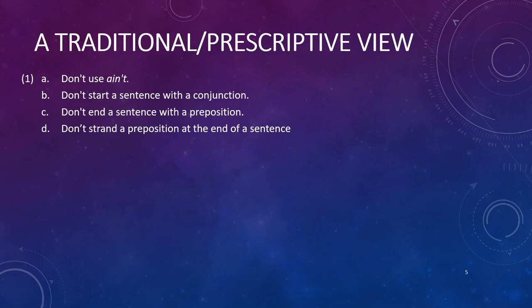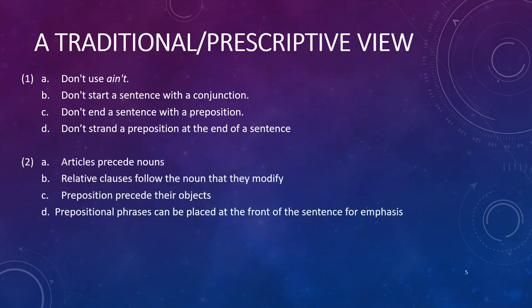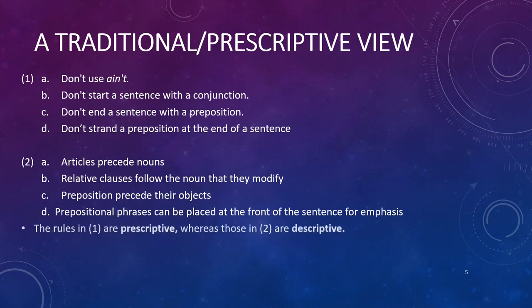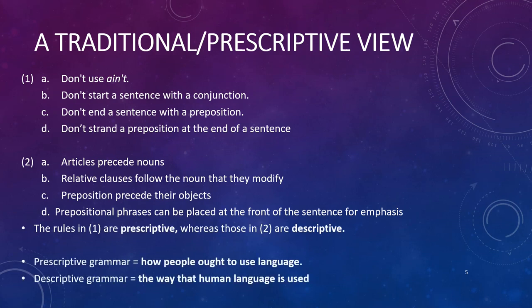A more descriptive traditional grammar would rather focus on what ordinary people do. For instance, articles precede nouns, or relative clauses follow the noun that they modify. A preposition precedes its object, and prepositional phrases can be placed at the front of the sentence for emphasis. The rules in set one are prescriptive, whereas those in set two tend to be descriptive. A prescriptive grammar is how people ought to use the language according to language authorities, while a descriptive grammar tells us the way that humans actually use language in ordinary contexts.